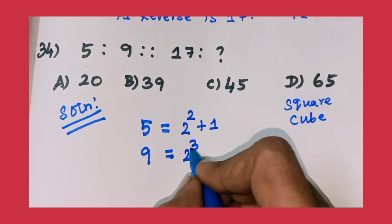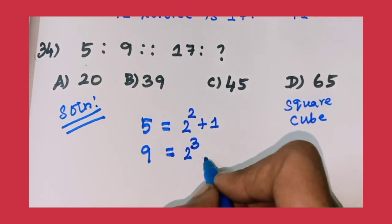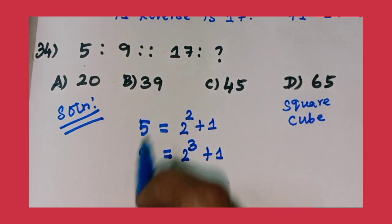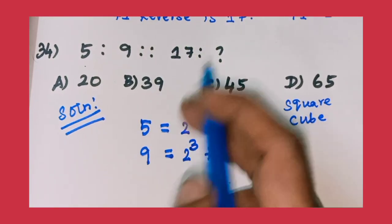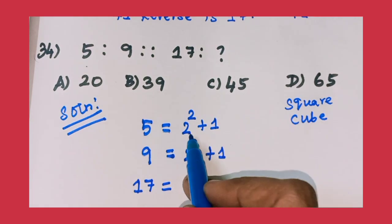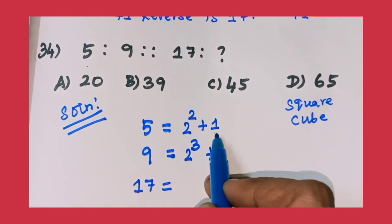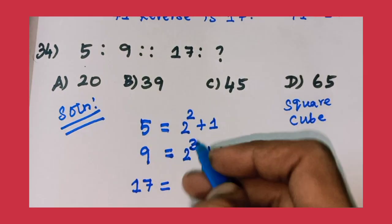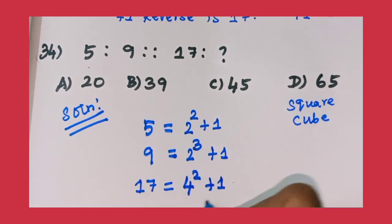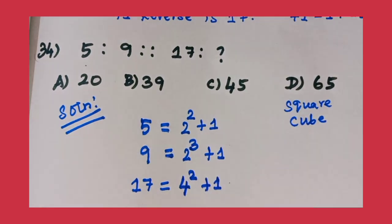2 cube, 2 cube is 8, 8 plus 1 equals 9. The third term is 17. So 17 equals, first is the square concept, so third one is square concept: 4 square plus 1. 4 square is 16, 16 plus 1 equals 17.